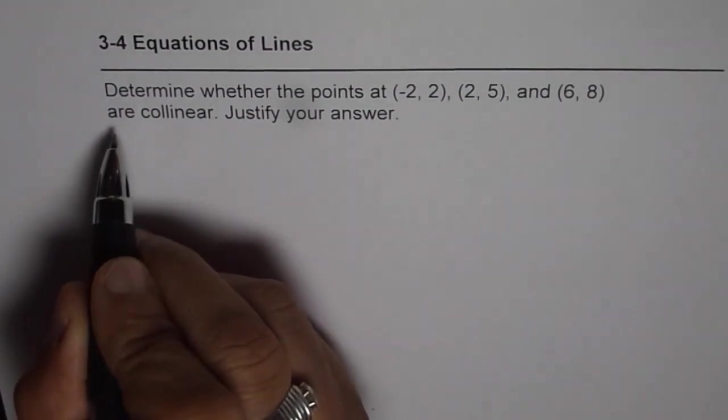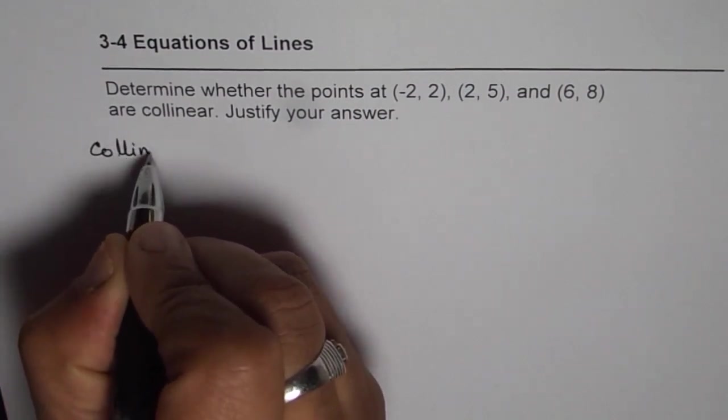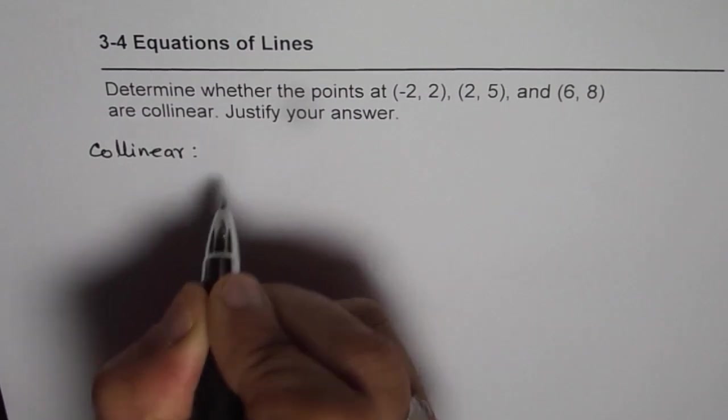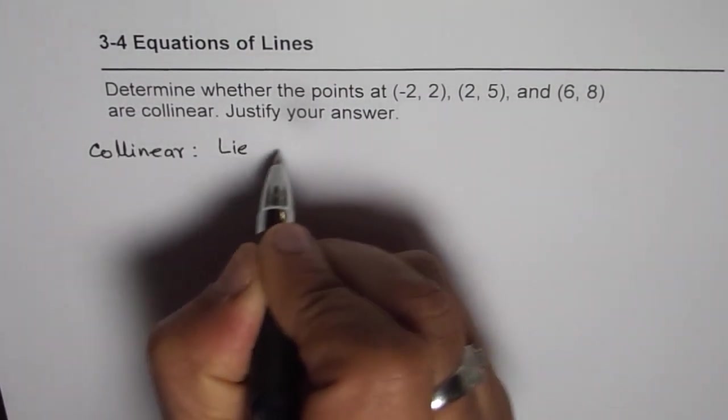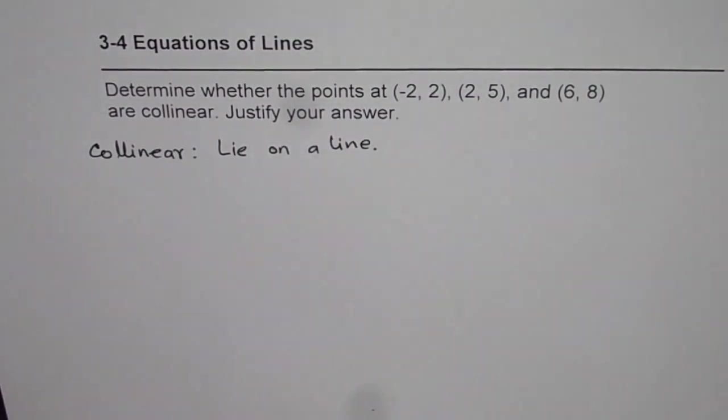So let us first understand what are collinear points. When we say collinear, that means the points which lie on a line. Those points are collinear.